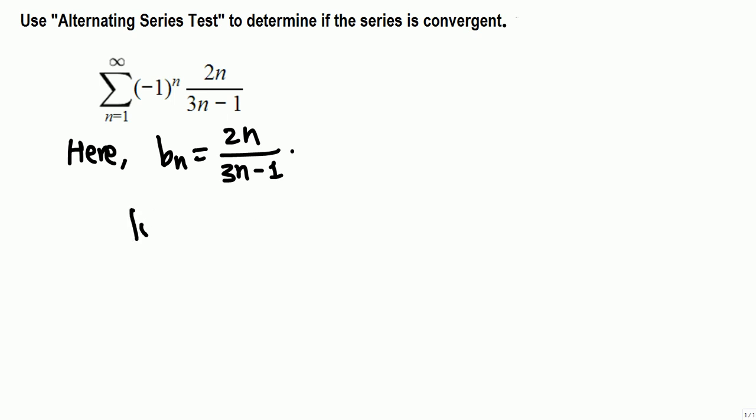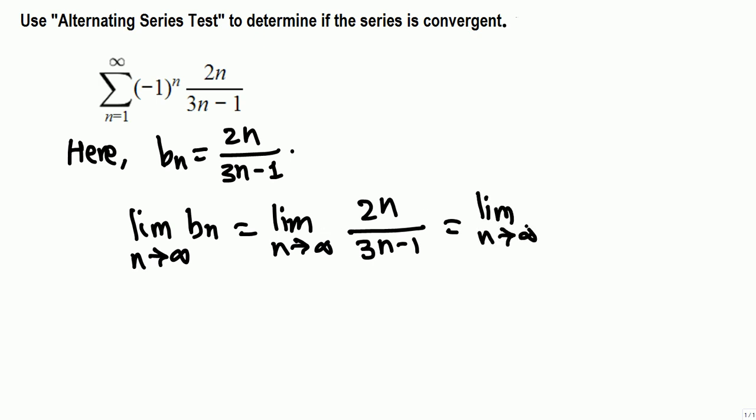I can show you here: limit of b_n when n goes to infinity is same as limit n goes to infinity of 2n over 3n minus 1. When n is very big, this fraction only the leading terms matter, so the limit of this fraction is same as the limit of 2n over 3n, and n cancels: 2/3, that's not equal to 0.